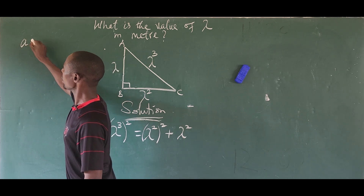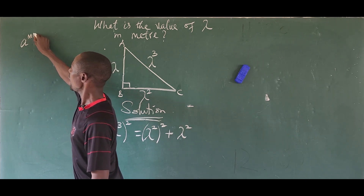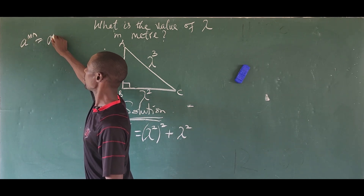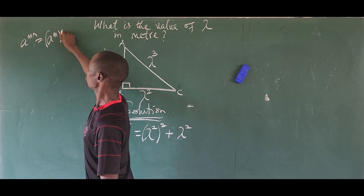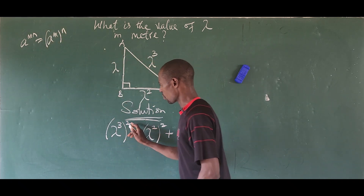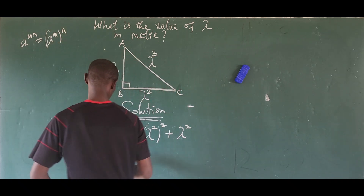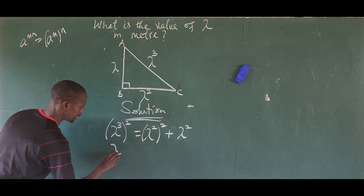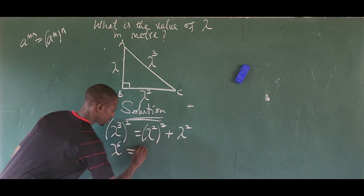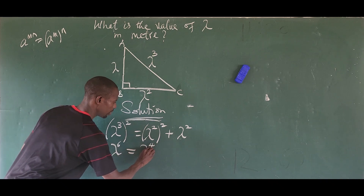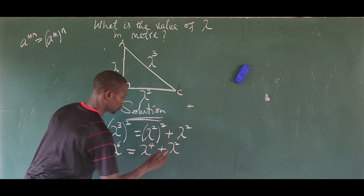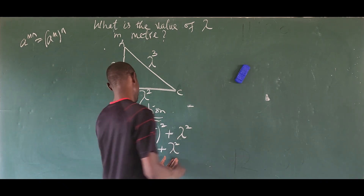...we can use this rule to expand our expression. So applying it, this gives us lambda to the power of six equal to lambda to the power of four plus lambda to the power of two. We then move the quantities on the right-hand side to the left side of the equation.